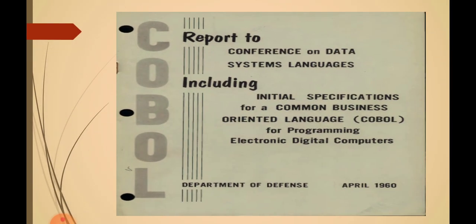ALGOL was originally developed in 1958. The next example is COBOL. COBOL is an acronym for Common Business-Oriented Language. It is a compiled, English-like computer programming language designed for business use.